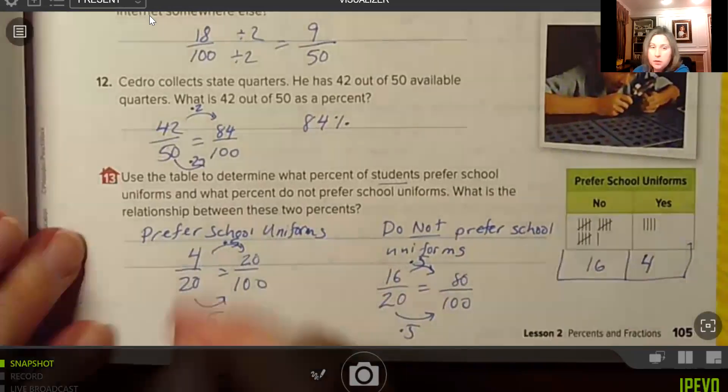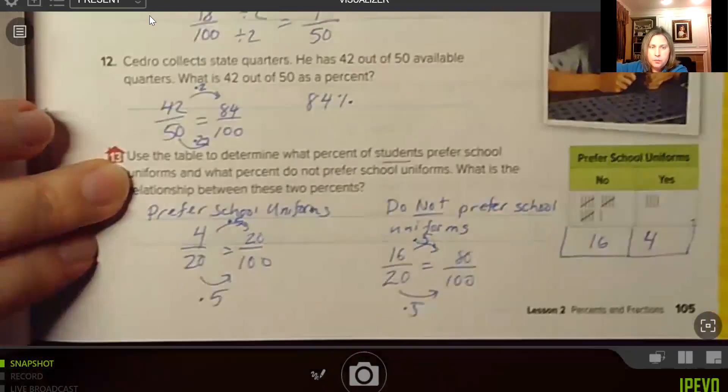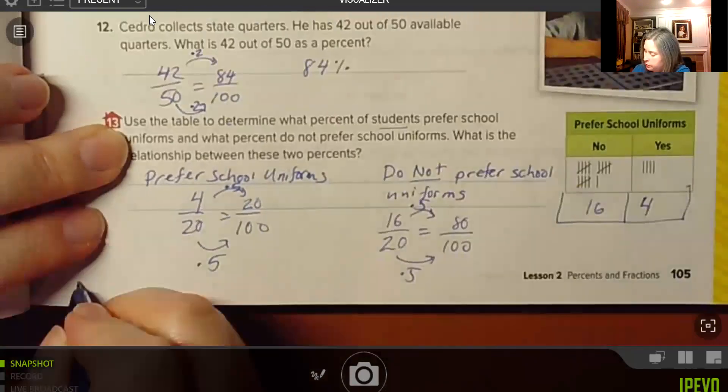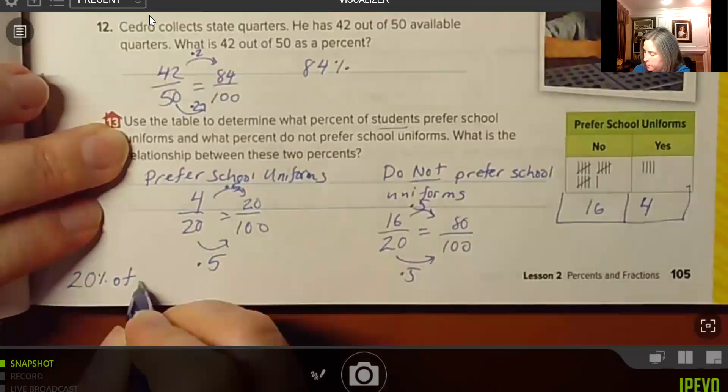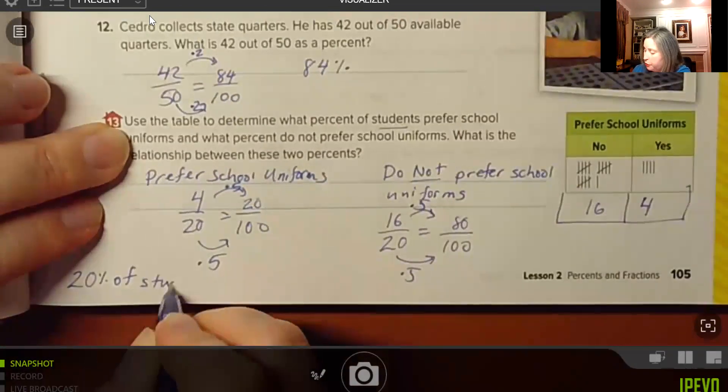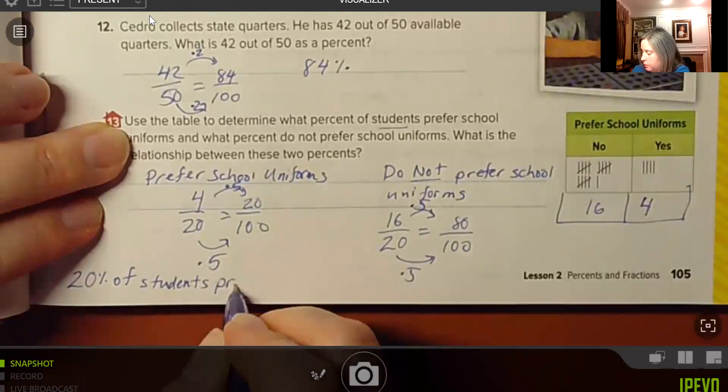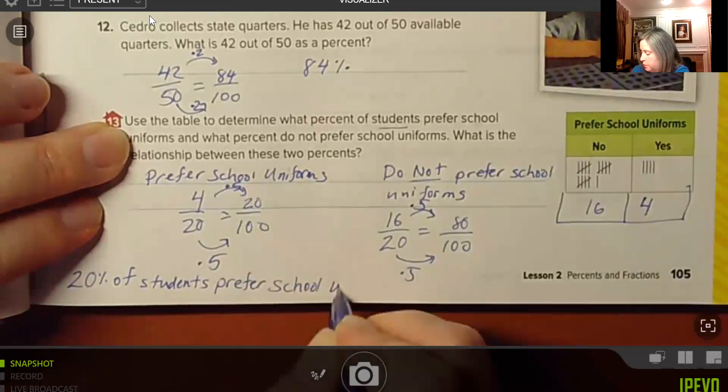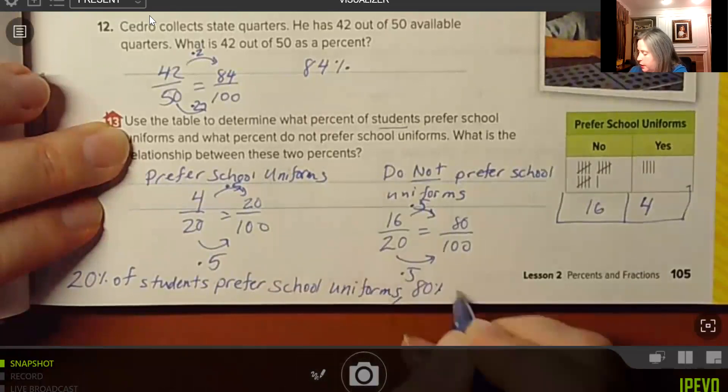So 20% of students prefer school uniforms, and 80% of students do not.